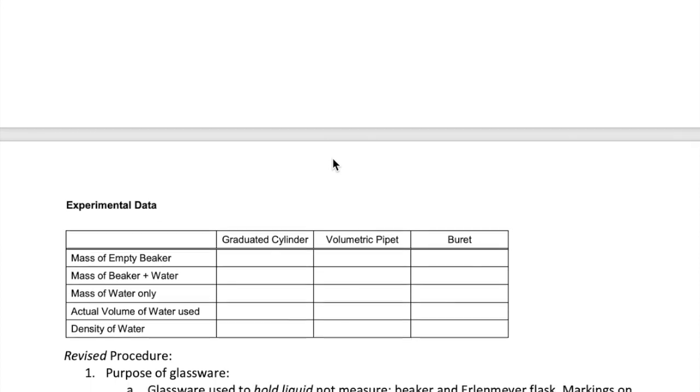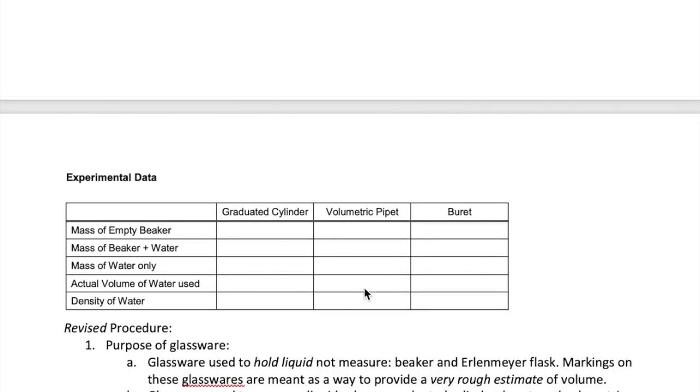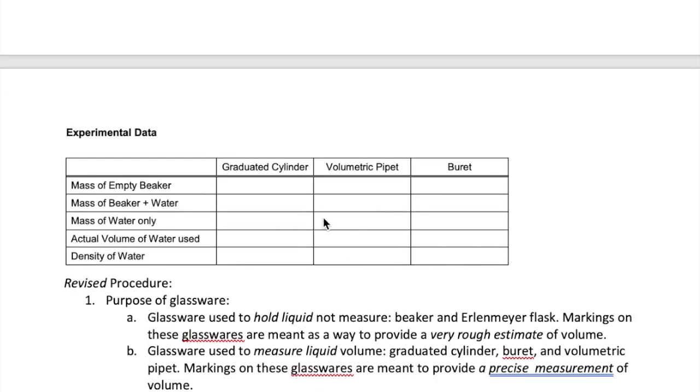So I want to explain to you how you should fill in the data in your lab report for part A. As you see here, there are three columns. Each column corresponds to a specific glassware that you're going to use to measure the volume. So when you're using graduated cylinder to measure the volume of your water, all the values are going to be written in this column. When you're using the volumetric pipette to measure the volume, everything goes to column number two. When the burette is used to measure volume, all the values are going to go to the third column.